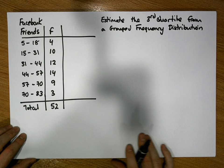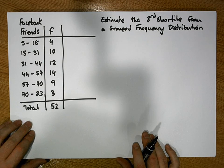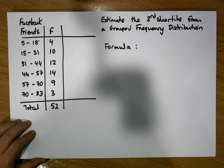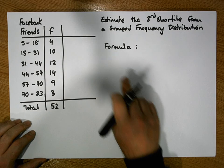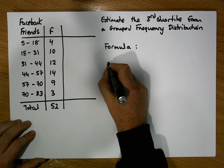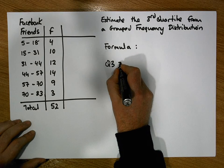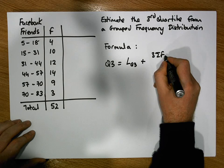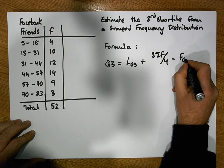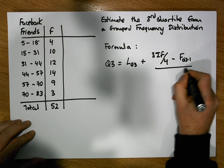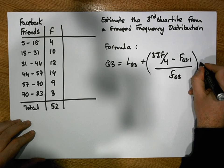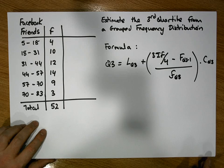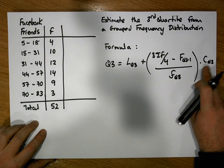The first thing is we do have a formula to calculate the third quartile. Although it might look a little complicated, it's actually straightforward once we identify what's known as the quartile class. The formula for the third quartile, symbolized Q3, is: Q3 = L_q3 + [(3Σf/4 − F_(q3−1)) / f_q3] × c_q3. There are really only five values we require.